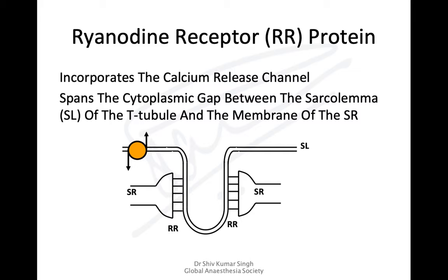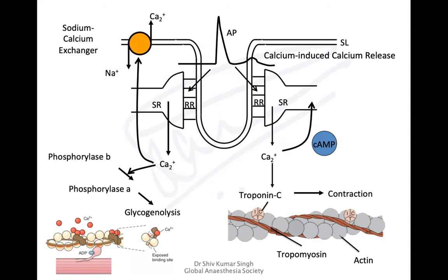The ryanodine receptor is a calcium release channel spanning the cytoplasmic gap between the T-tubule sarcolemma and the sarcoplasmic reticulum membrane, and is linked to the voltage-gated dihydropyridine (DHP) channel. The DHP receptor is not shown in the diagram but is linked to the ryanodine receptor.